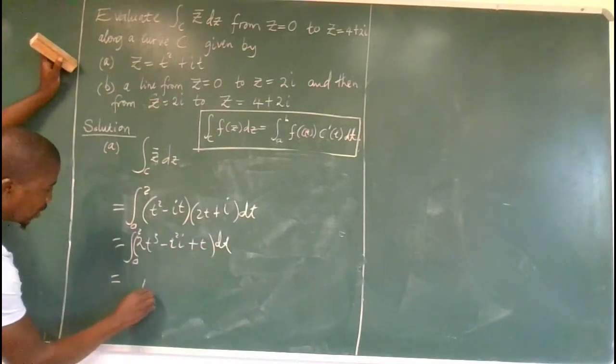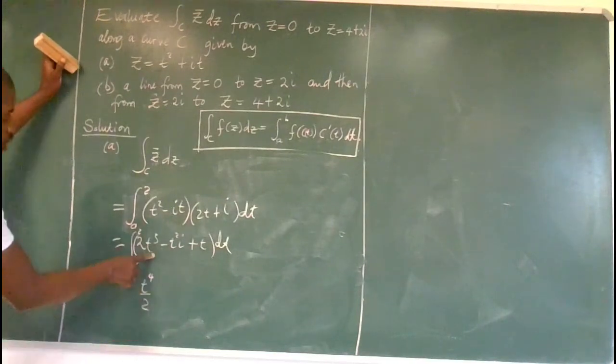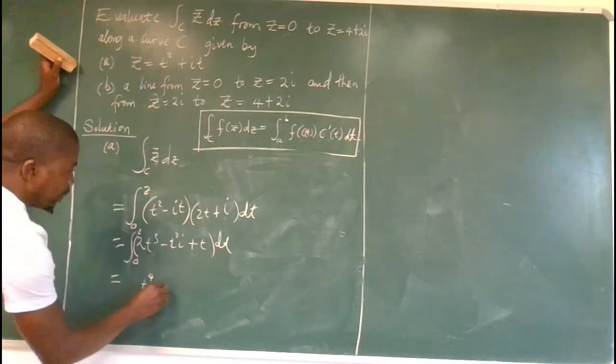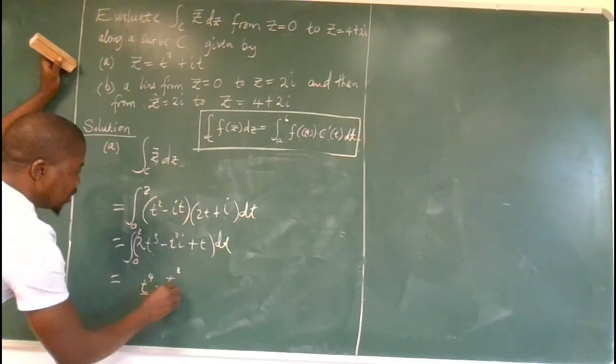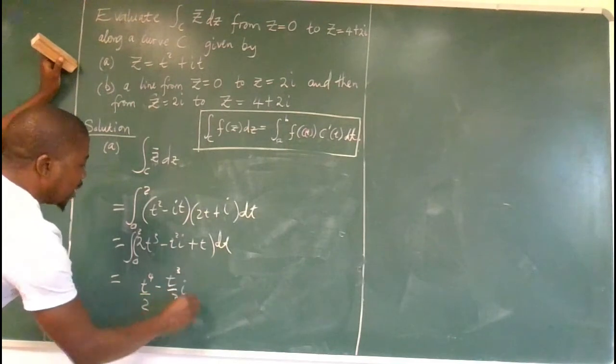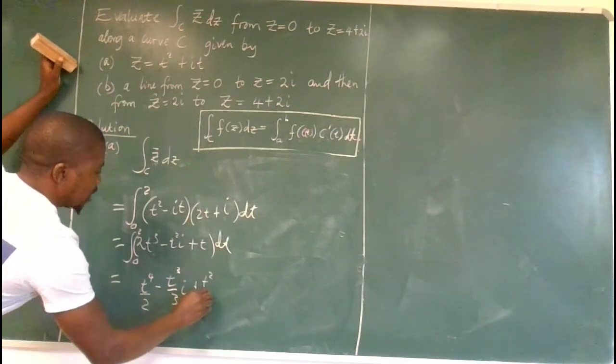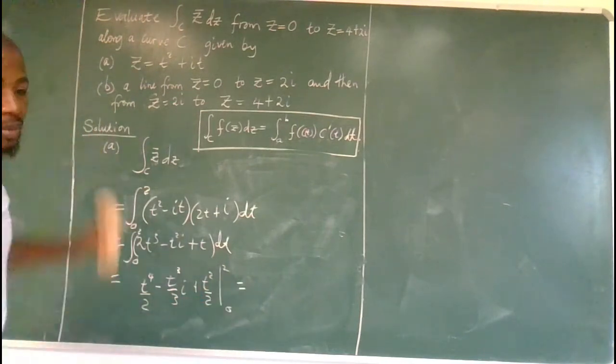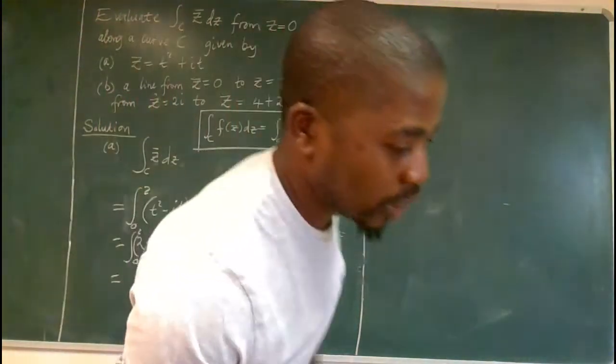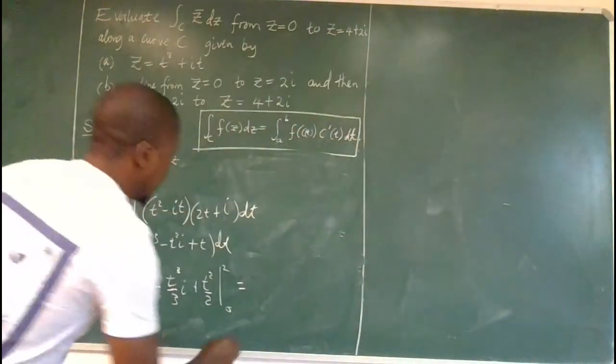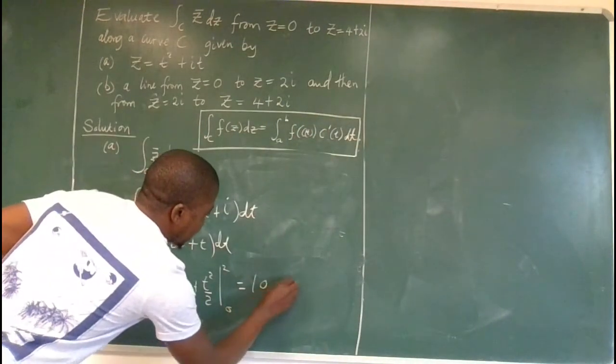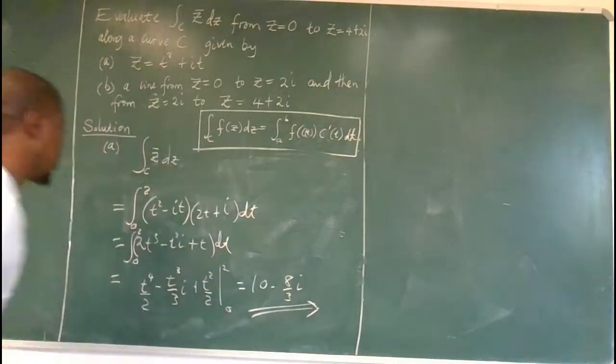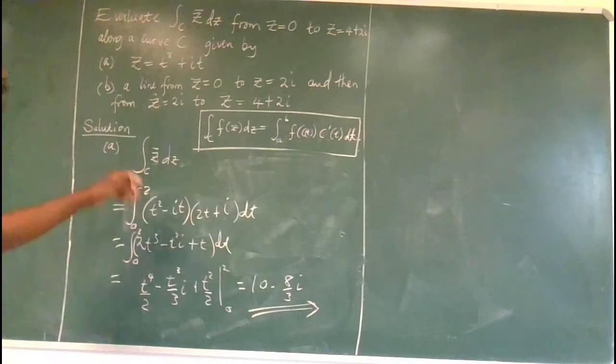So if you integrate, you have t to the power of 4 over 2, because this should be t to the power of 4 over 4, but 2 into 4 is 2 minus t cubed over 3 i plus t squared over 2, evaluated from 0 to 2. So if you do the math correctly, you are supposed to get 10 minus 8 over 3 i. This is the answer for part A.